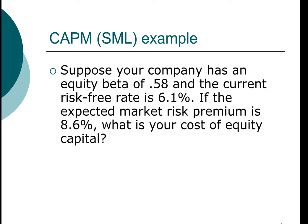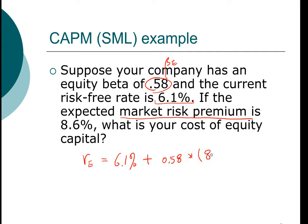Let's look at an example. We know the beta of the stock is 0.58 — this is the beta of equity — and the risk-free rate is 6.1%. We are given the market risk premium directly, so we don't have to subtract the two. Using CAPM, we estimate the cost of equity as the risk-free rate of 6.1% plus the systematic risk of 0.58 times the market risk premium of 8.6%. Note: if you are given the market return instead, you would subtract the risk-free rate to get the market risk premium. In this particular case, by design, the required return also turns out to be 11%.